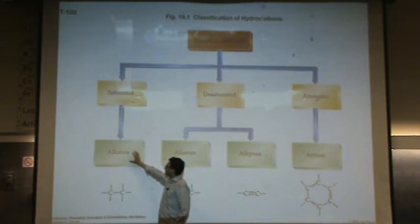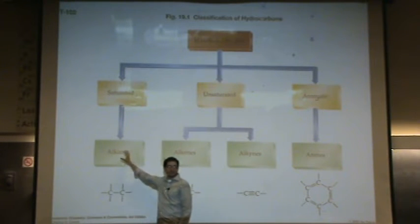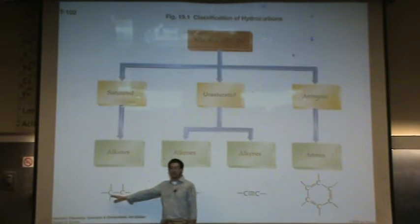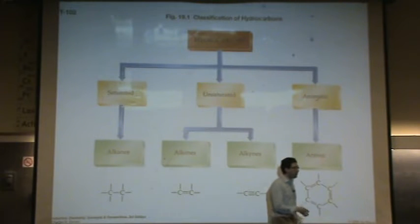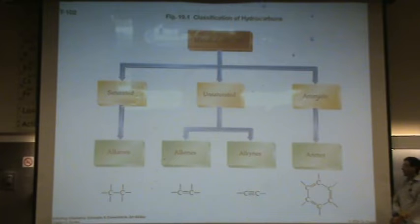A saturated hydrocarbon, let's call it an alkane, and this is the one you need to know, an alkane. We are going to, in our class, spend most of the time on the alkane because it is the simplest. An alkane is a carbon structure that only has single bonds. So it is carbon single bonded to other carbons and hydrogens.